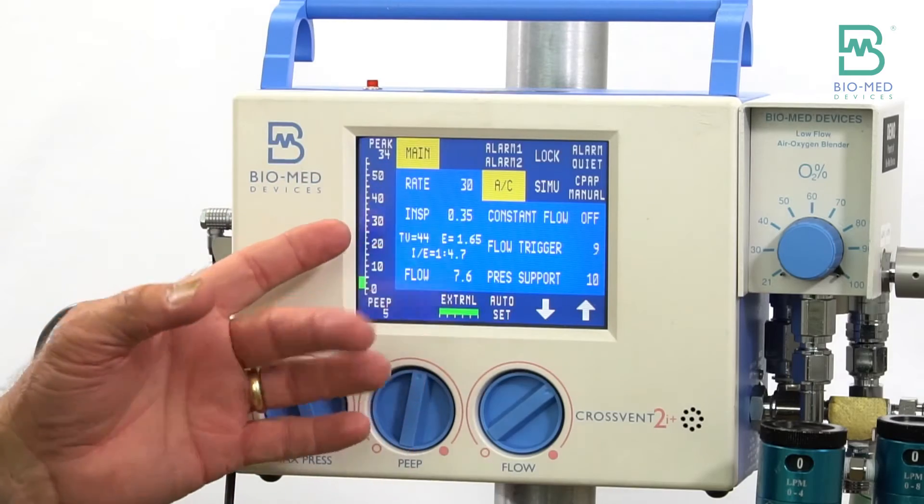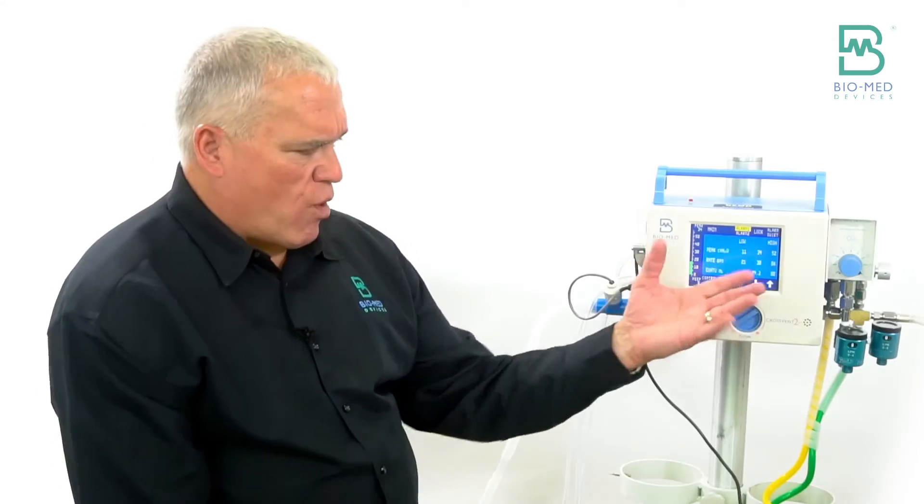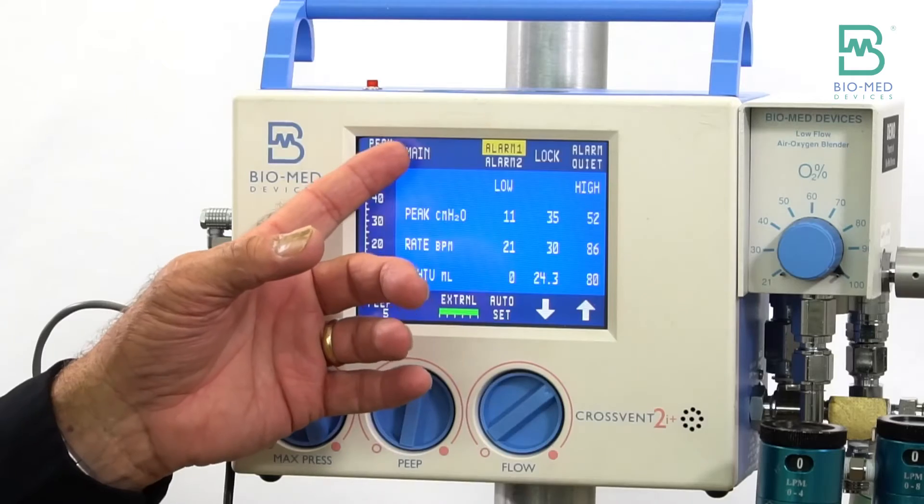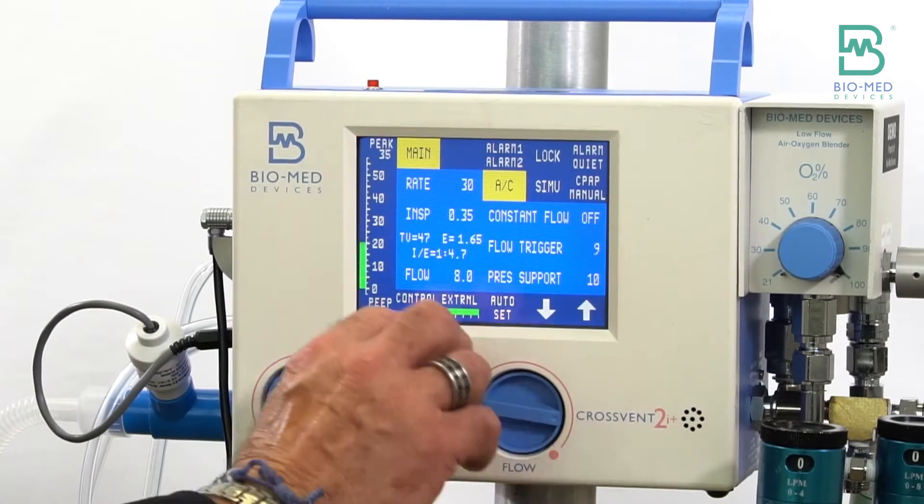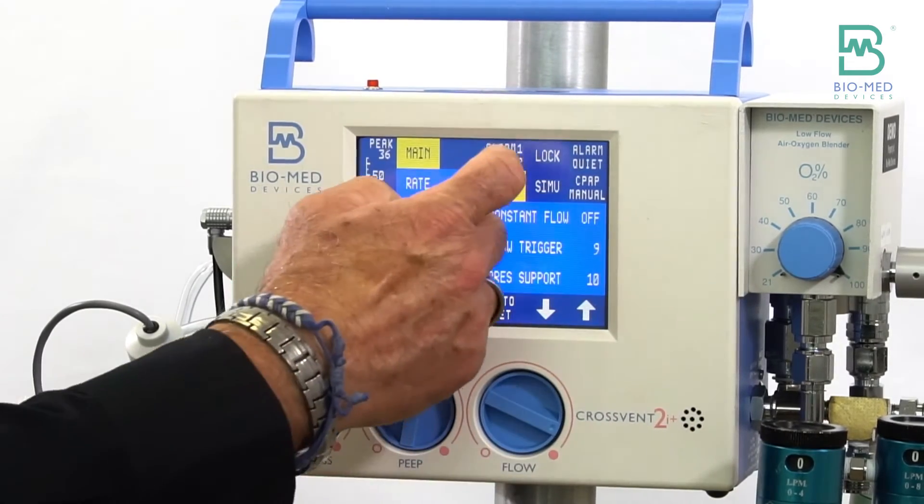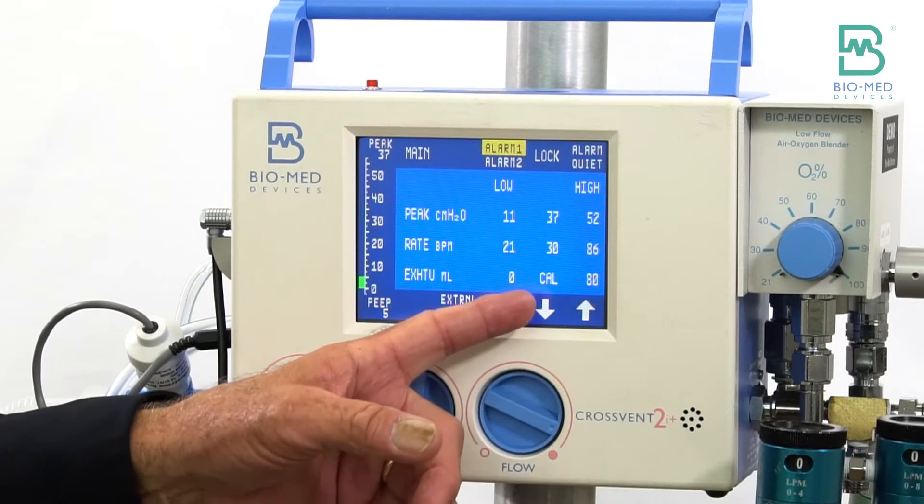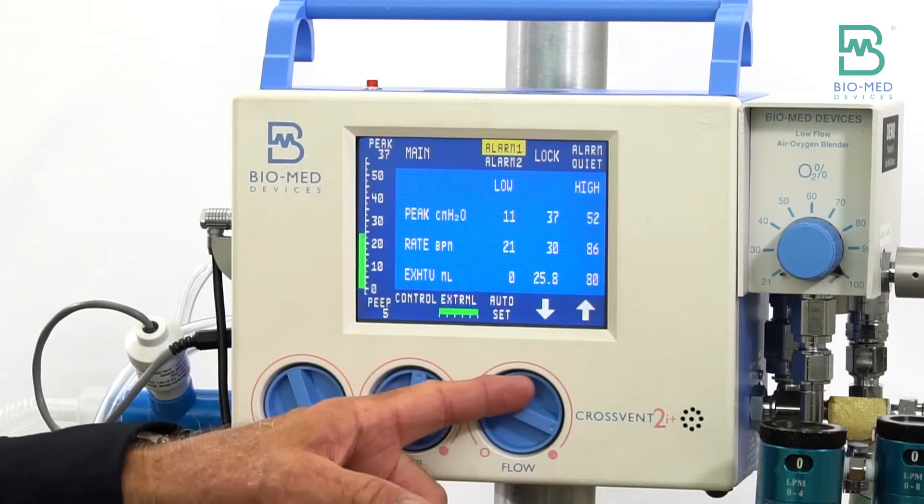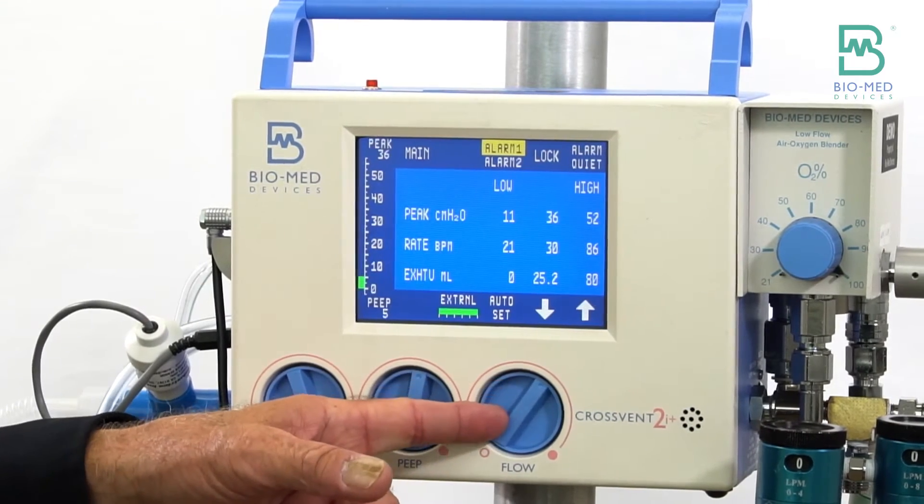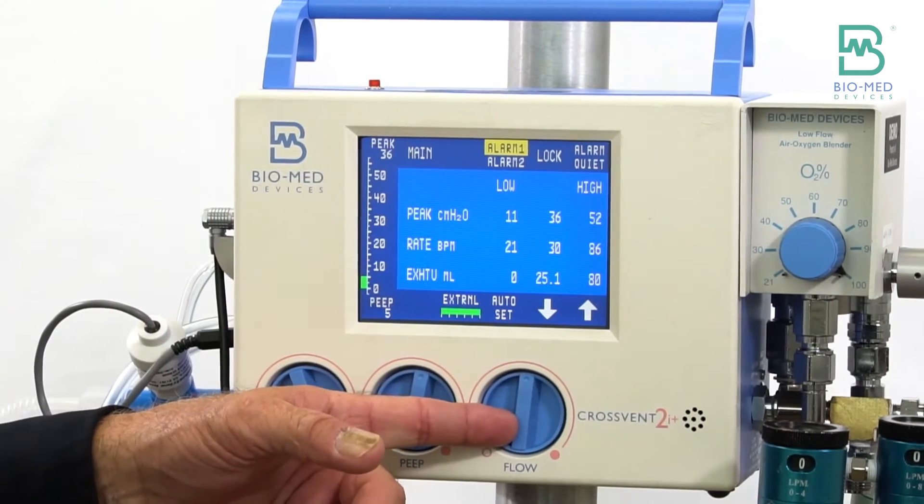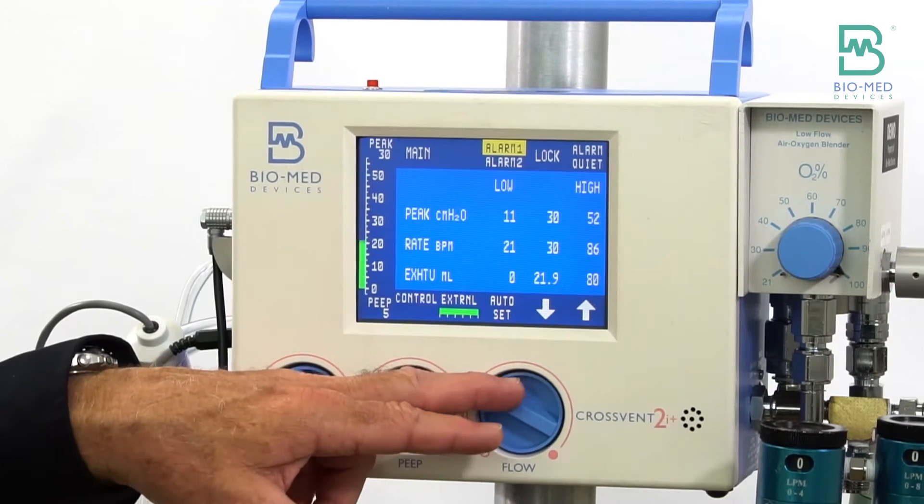So if I look at my exhale tidal volume I'm at 24, so you're pretty close. But the point is that as you adjust your flow you're changing that volume. So all I would really need to do if I really wanted, say, 25 - you can adjust your flow up or down. If I wanted 20, as I turn my flow down I'm actually decreasing that set volume and you can dial in your volume that you want.